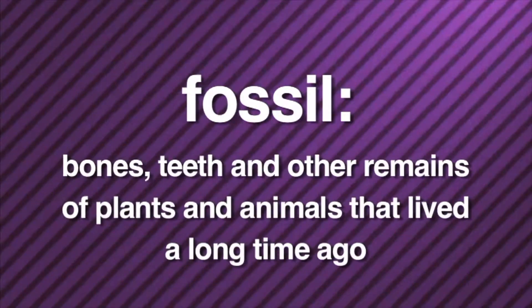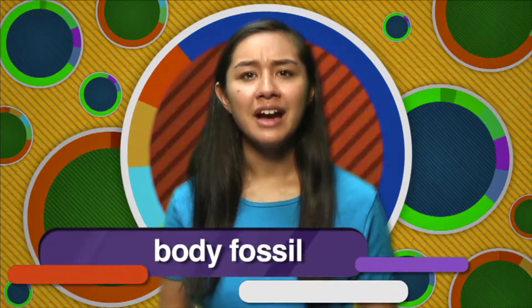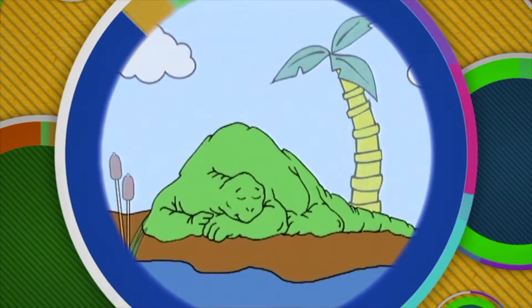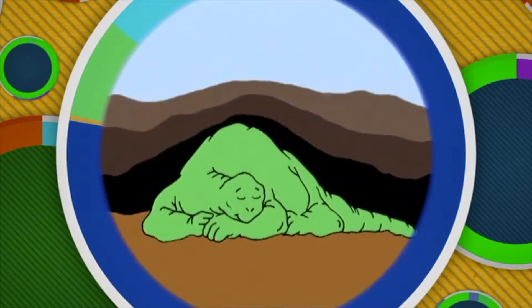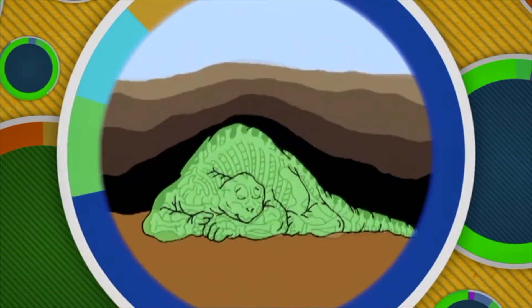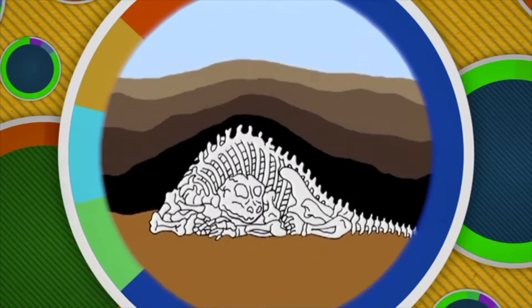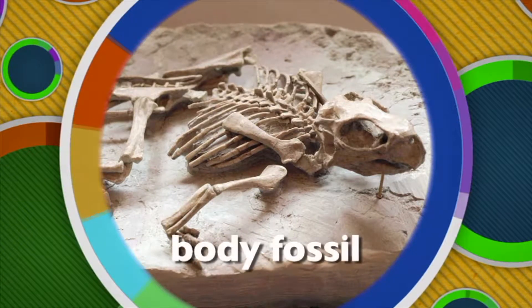Fossils are the bones, teeth, and other remains of plants and animals that lived a long time ago. There are different kinds of fossils. The first type is called a body fossil. Let's say a dinosaur died near a pond or lake. Over the years, sand and mud piled up around the dead dinosaur. The soft body parts like skin, brain, and heart decayed. However, minerals from the ground seeped into the bones and teeth, and eventually the hard parts of the dinosaur's body turned to stone. That's what a body fossil is.